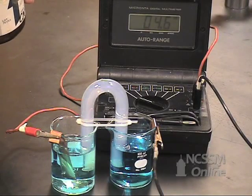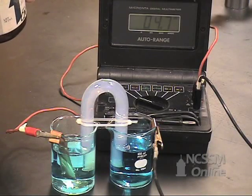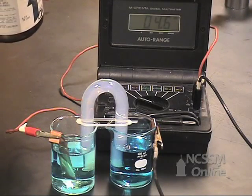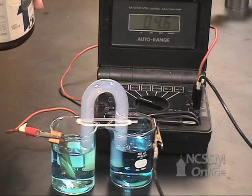This should reduce the copper ion concentration to below the concentration in the left half cell. We'll switch which half cell is the anode and the cathode and the voltage should turn negative.